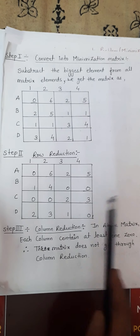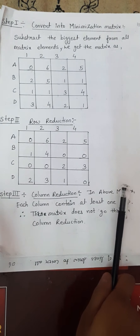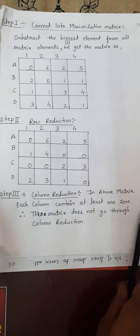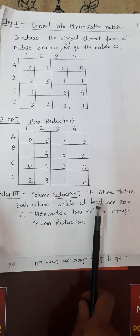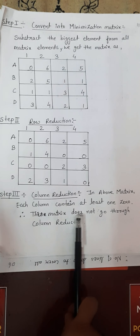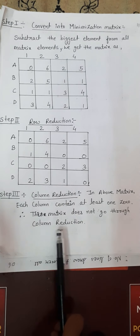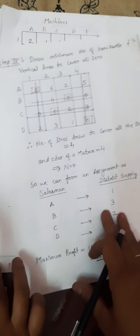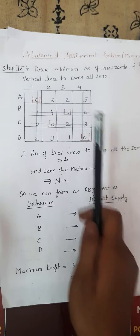Now we go through column reduction. In the above matrix, each column contains at least one zero. Therefore this matrix does not require column reduction and we skip it.